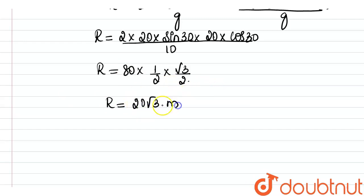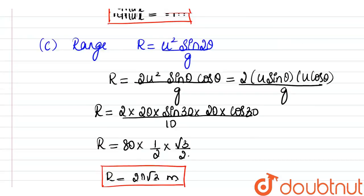To summarize: the total time for which the football is in air is 2 seconds, the time taken to reach maximum height is 1 second, the maximum height reached is 5 meters, and the horizontal range of the projectile is 20√3 meters.